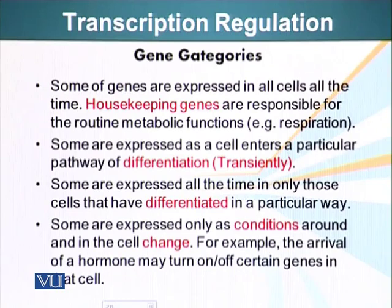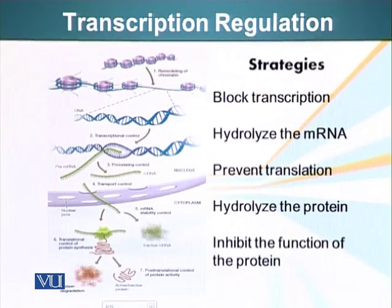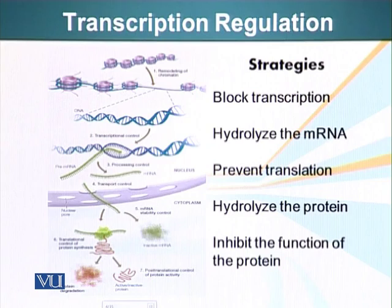There are mechanisms which allow organisms to regulate what type of proteins are present in a cell. Some of the strategies, other than blocking transcription or making RNA from DNA, include hydrolyzing the messenger RNA after it has been made — it can be hydrolyzed. It can be prevented from becoming translated and forming a protein. If the protein has been formed, the protein can be hydrolyzed, so if the protein is not there, it will not be able to give that specific function to the cell.